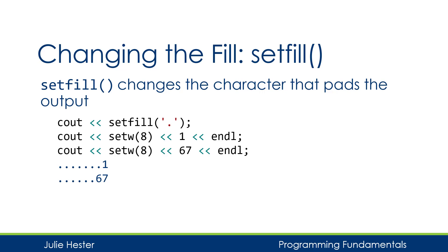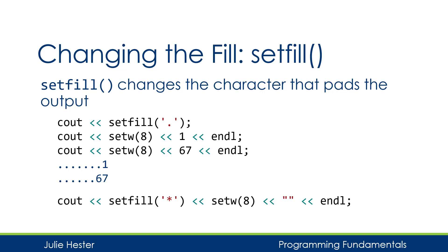Another cool thing you can do with setfill is print a string of one repeated character. Use setfill to specify the character you want, say setw(8) to get 8 asterisks, and then follow it with an empty string — printing nothing. You'll end up filling all 8 characters with asterisks. After executing this statement you'll see a row of asterisks, which can be used to make your display more decorative.